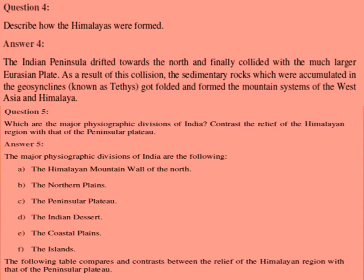Question 4: describe how the Himalayas were formed. The answer is — the Indian Peninsula drifted towards the north and finally collided with the much larger Eurasian Plate. As a result of this collision, the sedimentary rocks accumulated in the geosyncline known as Tethys got folded and formed the mountain systems of West Asia and the Himalayas.